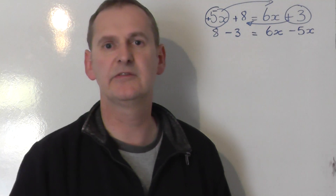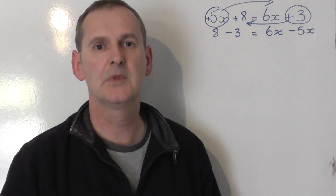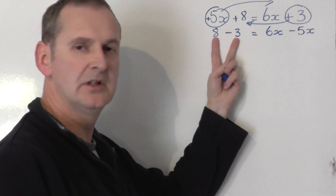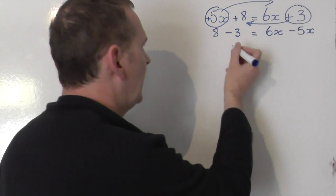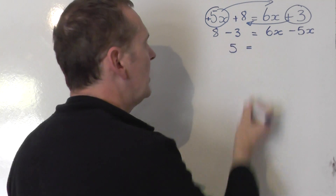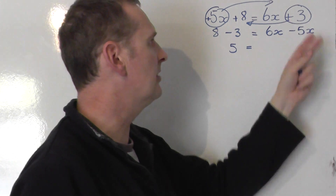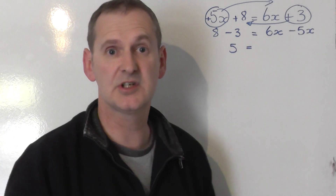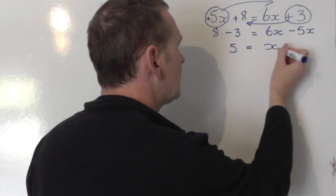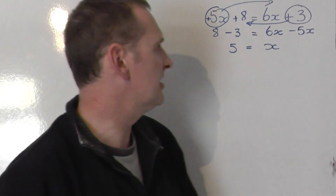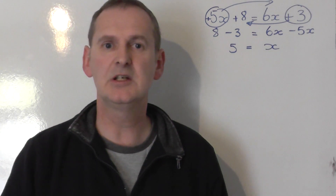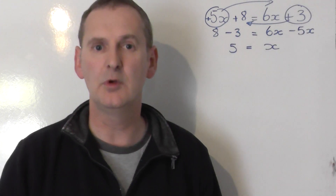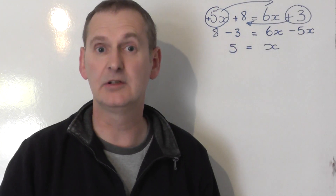So we end up with: 8 take 3 equals 6x minus 5x. Now we simplify. On the left-hand side, 8 take away 3 is 5. On the right-hand side, 6x take away 5x is just 1x, which is just x. And that is the answer to the equation. The solution is 5 equals x. The x is on the right-hand side because we collected x's where there were most x's — on the right-hand side.